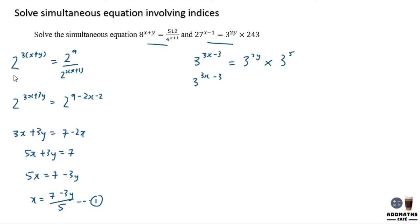And in this case, 3 to the power of 3x minus 3 equals 3 to the power of 2y plus 5. And this will give you 3x minus 3 equals 2y plus 5. The base are same, you can compare by the power. And 3x equals 2y plus 8.